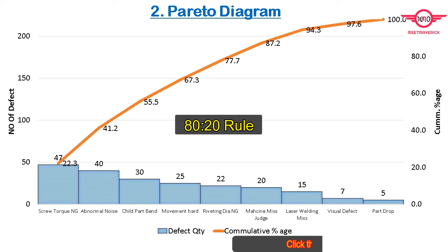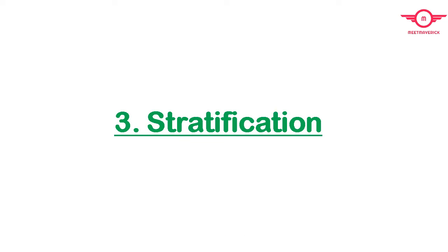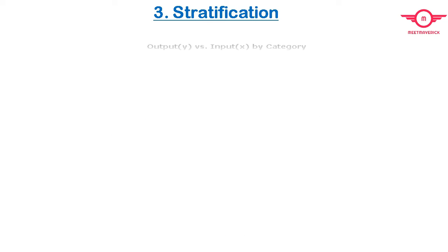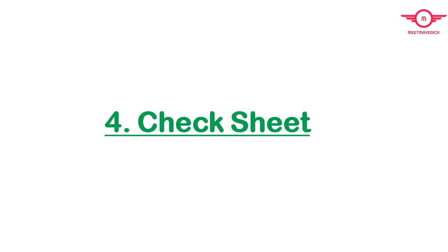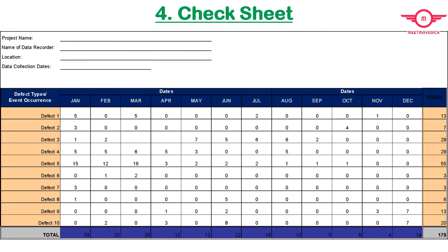The Pareto diagram communicates the principle of 80:20. It states that 80% of an effect comes from 20% of the causes. The next tool is Stratification. This tool is used for statistical visual representation. Stratification analysis is a quality assurance tool used to sort data, objects, and people into separate and distinct groups, which helps in deriving meaningful information to understand an existing problem.